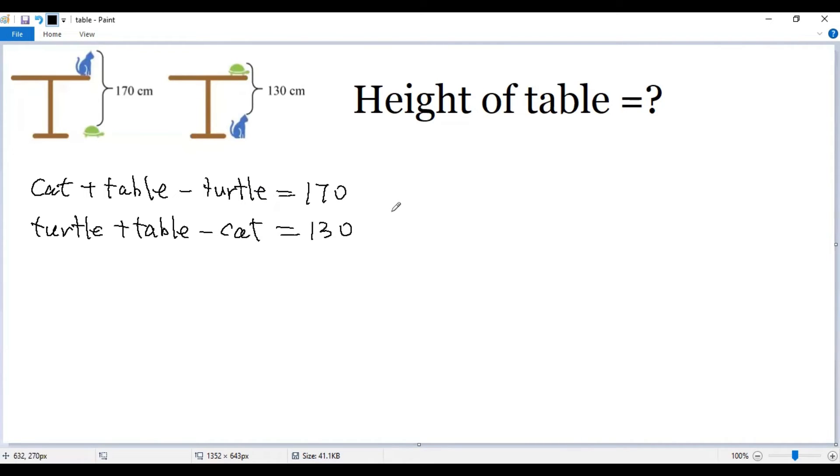Let's add these two equations together. For the left side, cat minus cat cancel, turtle minus turtle cancel. We only have two tables.